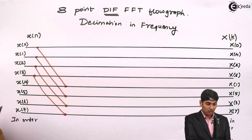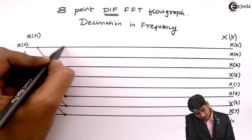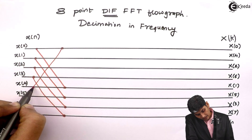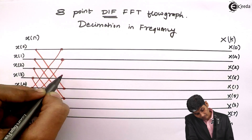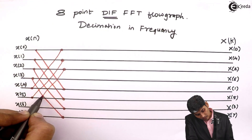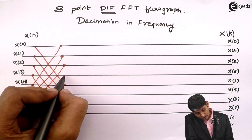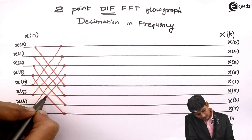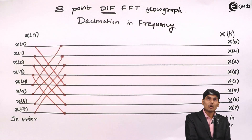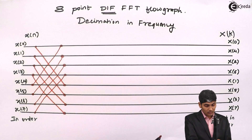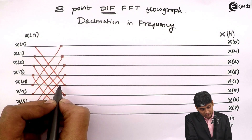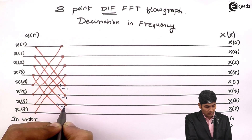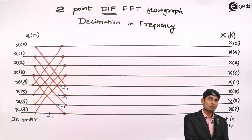From X of 4 onwards, lines will go up — X of 4 gets connected to X of 1, X of 1 to X of 5, X of 2 to X of 6, and X of 3 to X of 7. The last four lines will have a multiplier factor of minus 1.